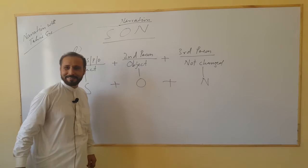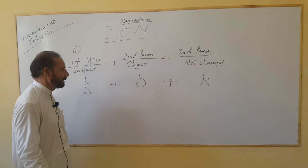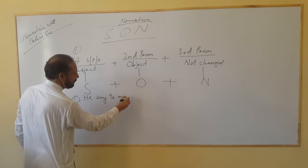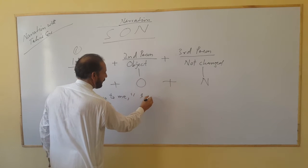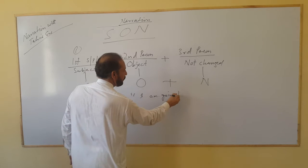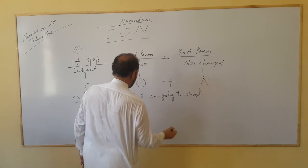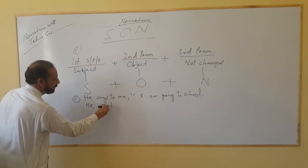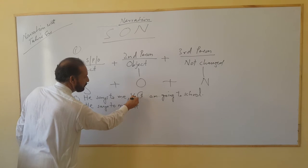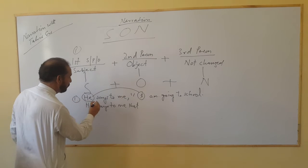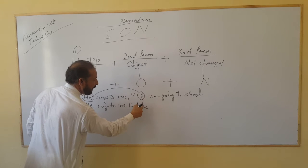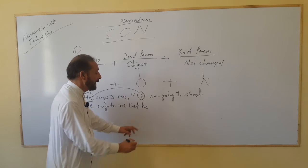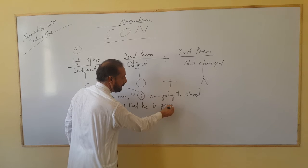This is SON. Now let us take some examples one by one. He says to me, 'I am going to school.' This 'I' is first person, and first person is changed with the subject of the reporting speech. So we use 'he' in place of 'I.' While the reporting speech is in simple present, the tense remains the same — 'I am going' becomes 'he is going.' Tense is not changed. He is going to school.